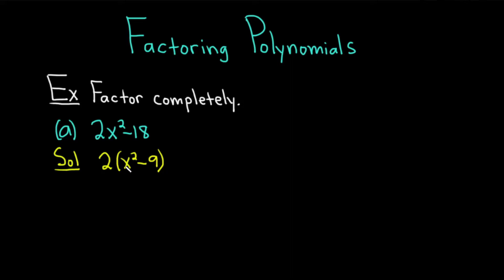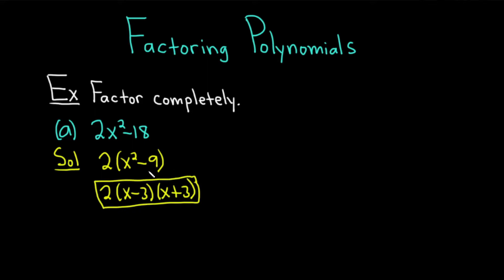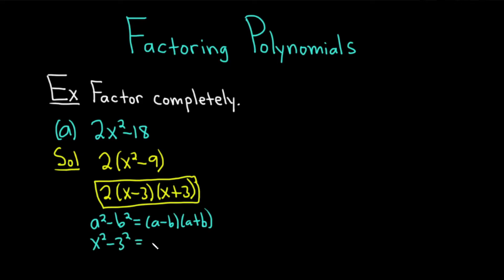Here we have a really good situation. x squared minus 9 is the difference of squares. This ends up becoming x minus 3 times x plus 3. The formula we used is: if you have a squared minus b squared, it's equal to a minus b times a plus b. It's called the difference of squares formula. So x squared minus 9 is really x squared minus 3 squared, and so that's x minus 3 times x plus 3.